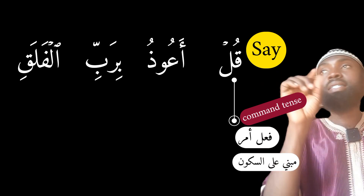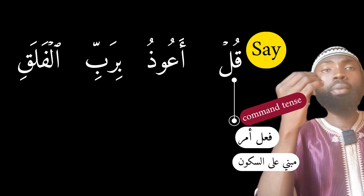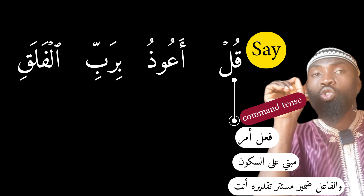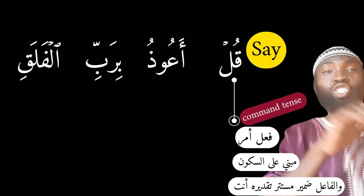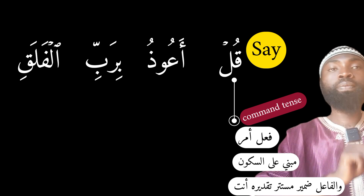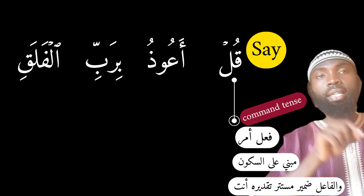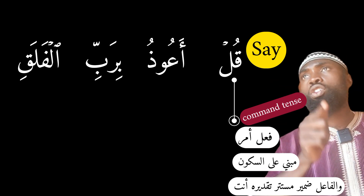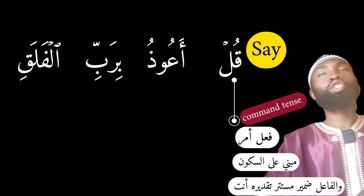Grammatically, 'Qul' is a command tense which is built upon Sukun. The subject from this word is a latent, hidden one, which is 'you.' So when I say to someone 'Qul,' that person will understand that I mean 'you say.' Just the way we say 'Qum' — when somebody looks at you and says 'Qum,' meaning 'stand,' he is talking to you, so you understand he means 'you stand.'